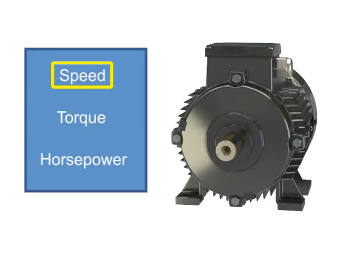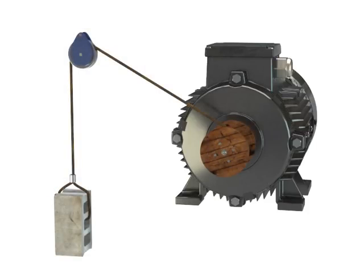Speed is defined as how fast the motor performs its work. For example, a shaft can rotate slowly or quickly. The typical units of measurement for rotational motor speed are revolutions per minute or RPM.